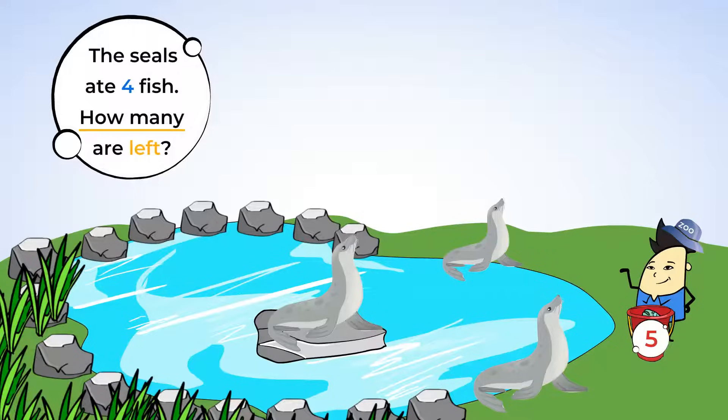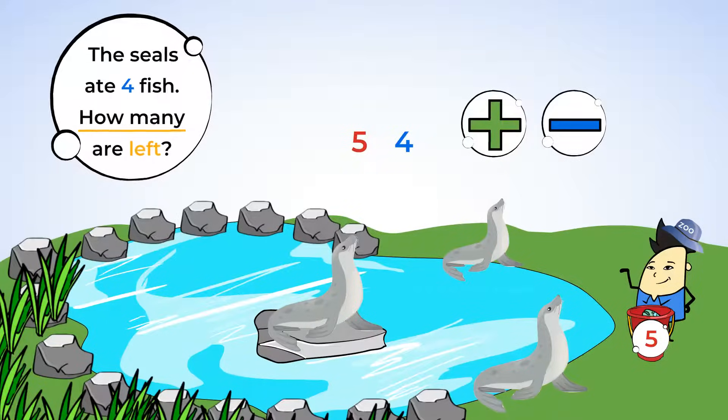Okay. This is another word problem. The problem says we have five fish and the seals ate four. Hungry little seals. So, five and four are our numbers. Let's write that down. Now, are we adding or subtracting? Let's look at the problem again. I see the word left. So, that's a good clue that we need to subtract.